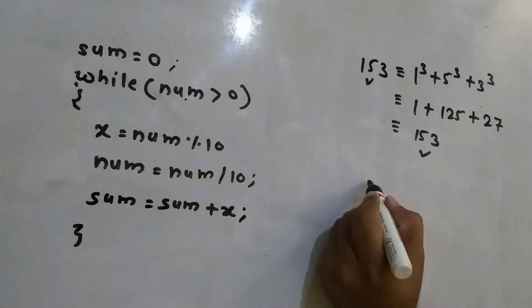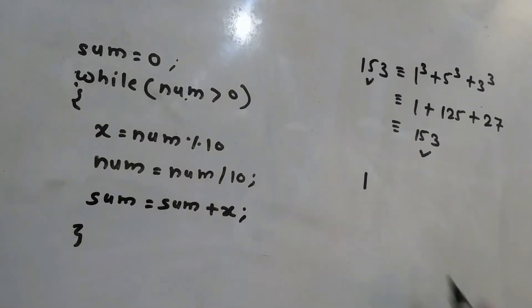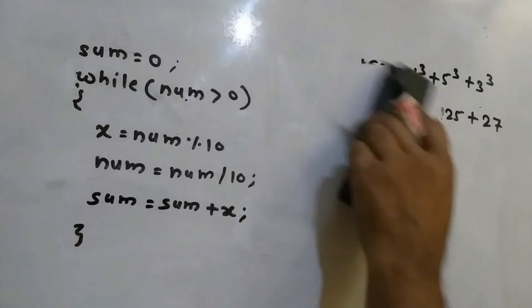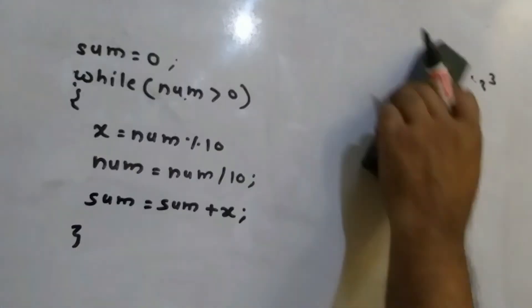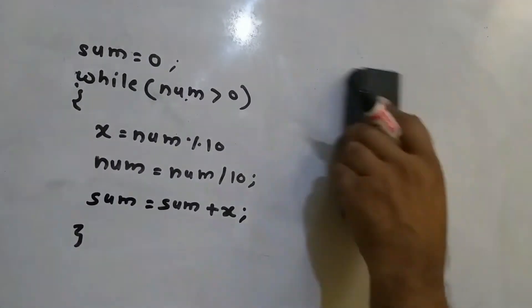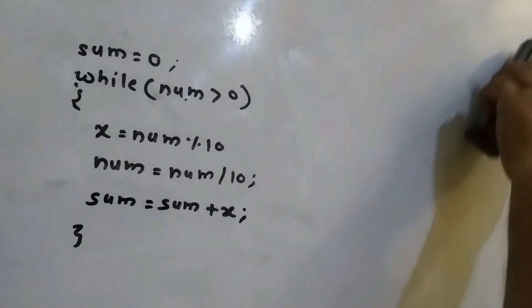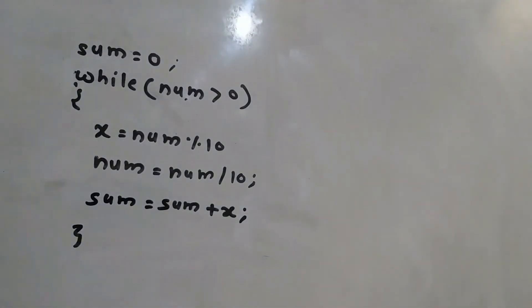Another example of an Armstrong number is 1, because 1 cube is 1. So now we are supposed to implement a program to check whether the user-entered number is Armstrong or not. I will accept one number from the user and print output whether it is an Armstrong number or not.